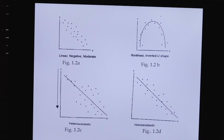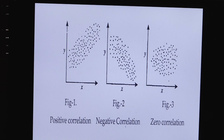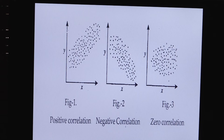Scattered diagram कई cases में linear नहीं होता - इसे हम linear, negative, moderate, non-linear या inverted U-shape, heteroscedastic, या homoscedastic form में show कर सकते हैं। Figure 1 में positive correlation दिखता है - X और Y दोनों increase कर रहे हैं। Figure 2 में negative correlation दिखता है - Y increase कर रही है but X की values downfall आ रही हैं। Zero correlation मतलब दोनों के बीच कोई relationship नहीं और correlation की value 0 होती है।